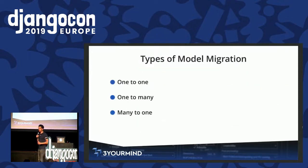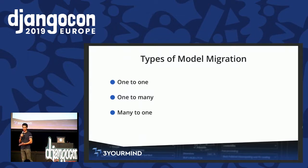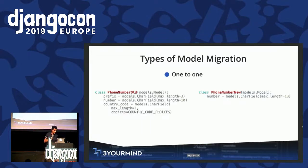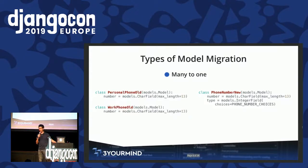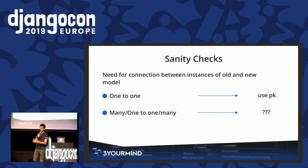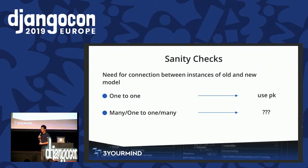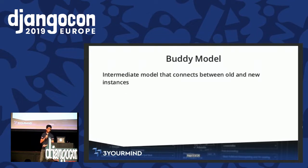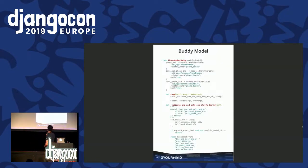So let's talk about the different types of model migration. One-to-one: one model is being translated into another new model. Another type is one model being translated into multiple new models, and the last is the opposite. When doing one-to-one it's completely fine, because I can use the primary key to check that the old model instance and the new model instance match. But when doing many-to-one or one-to-many, it's a big problem because I cannot use the primary key — it will duplicate. So what do I do? I create a bridge model — just a simple model that connects the old model with the new model.